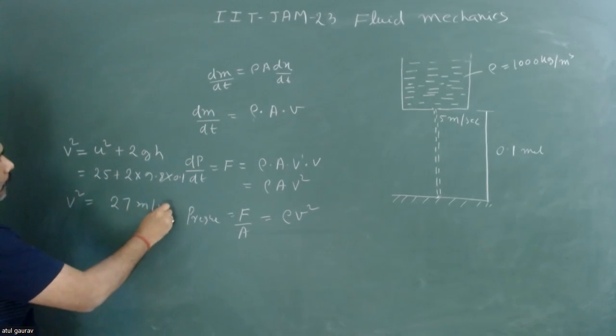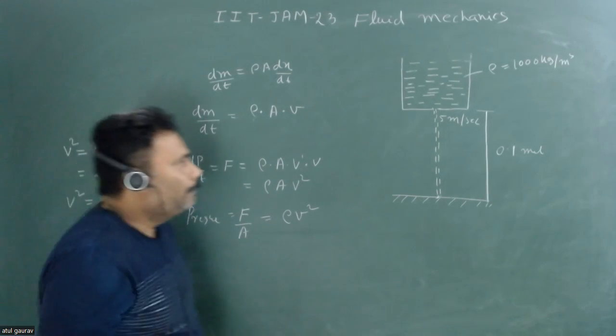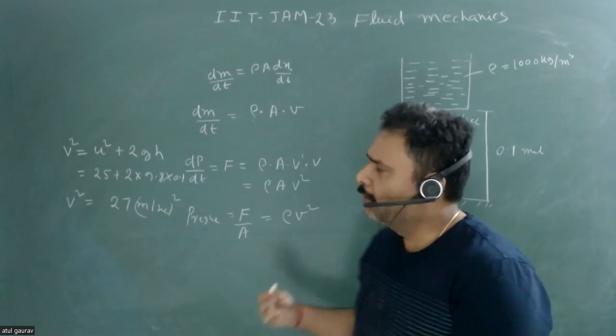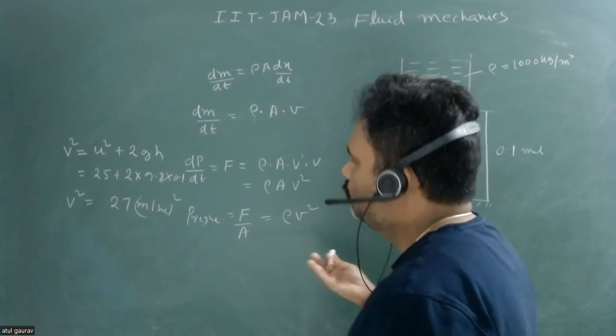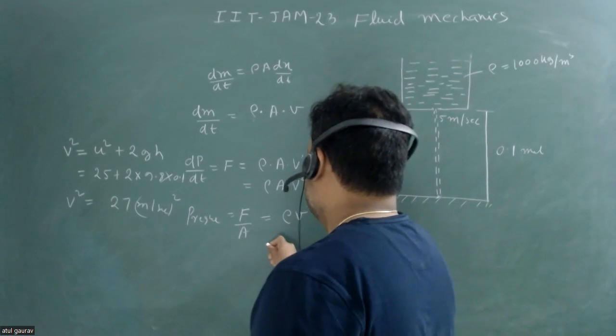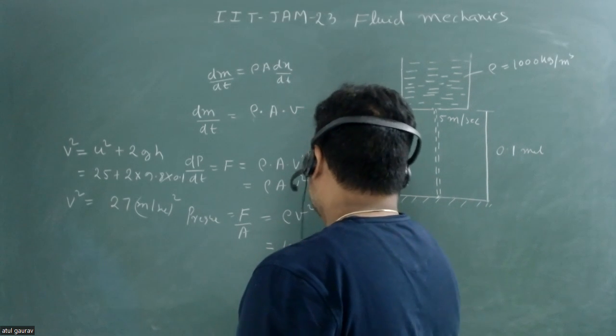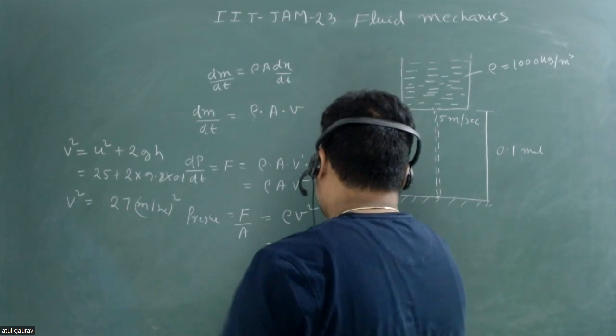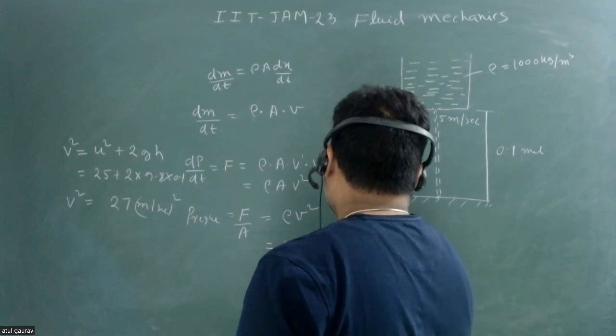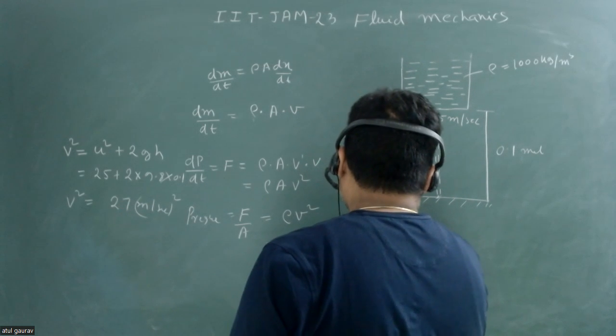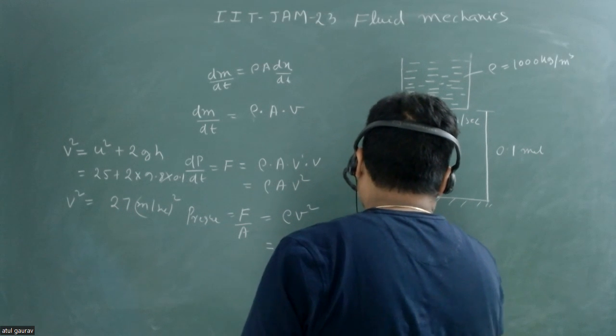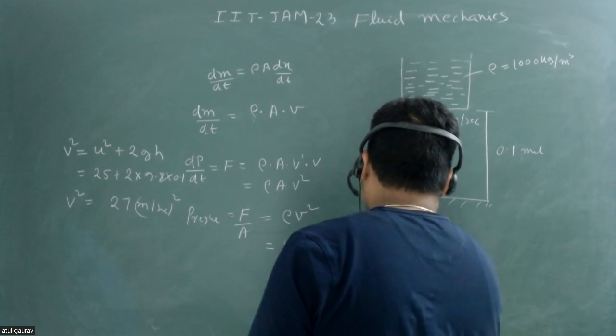Now we have to find the pressure in terms of kilonewton per meter square. This is given by 1000 into v², which is 27. So this will be 27 kilonewton per meter square. This will be your answer.